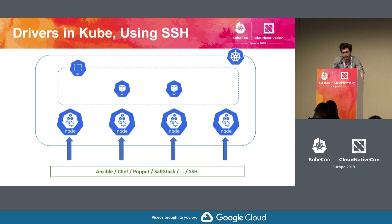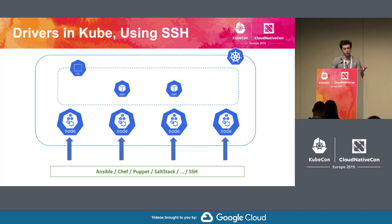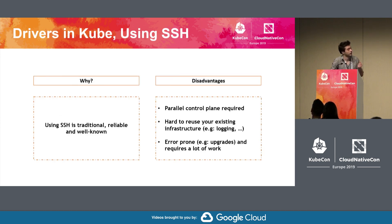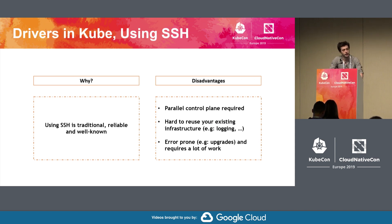How do we do drivers in Kubernetes? People will usually try the simplest or most intuitive way. They will deploy their Kubernetes and then SSH onto the nodes, whether through a simple shell script or something like Ansible, Chef, or Puppet. Why do they do that? Because it's traditional, it's well known, and it's reliable. But it also means you somewhat have a second control plane compared to Kubernetes. It's hard to reuse your existing infrastructure, and it's really error-prone, especially when you want to do driver upgrades.